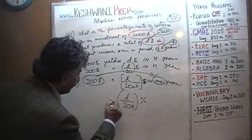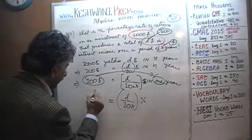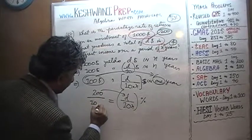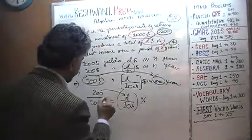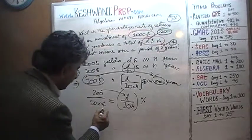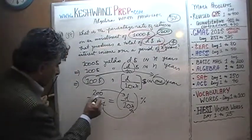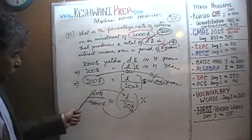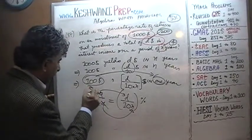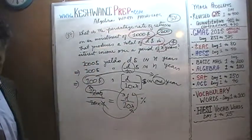So D over 10N is, in fact, the percentage. That amount should come out to 5 based on the values we plugged in: D = 200 and N = 4. So that's 200 over 10 times 4. Divide top and bottom by 10 — the zero drops out — and 20 divided by 4 is 5. This answer is correct.